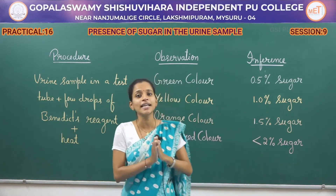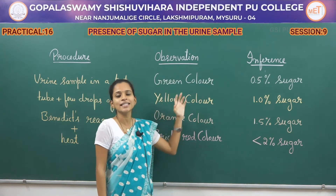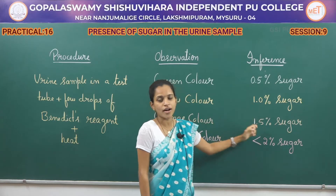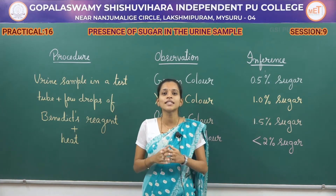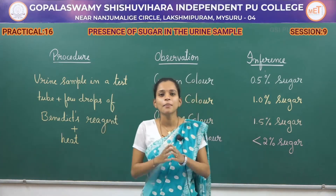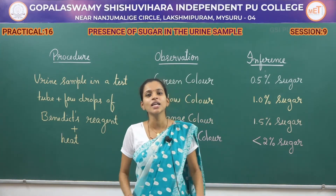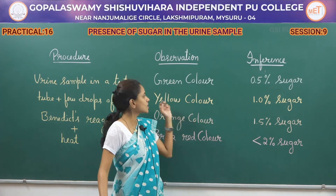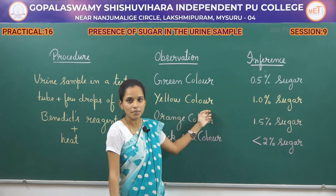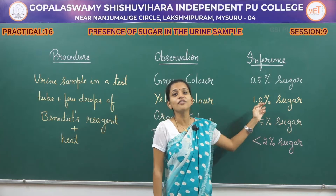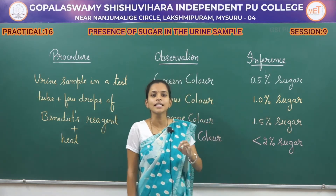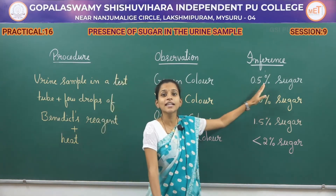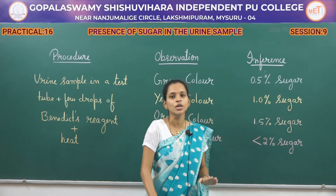While you heat, if the colour retains at any one position, it indicates the presence of sugar at either 0.5%, 1%, 1.5%, or more than 2%, based on the colour remaining in the test tube. For example, if while heating the test tube shows yellow colour and retains that colour, it indicates the sugar content is 1% in the given urine sample. So if the colour retains at any one stage, it indicates the respective percentage of sugar.